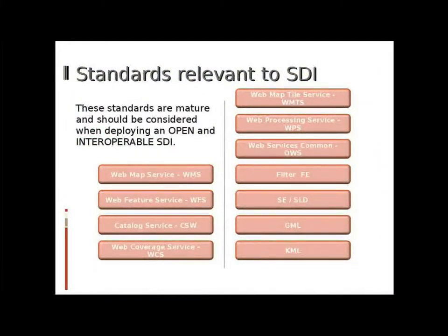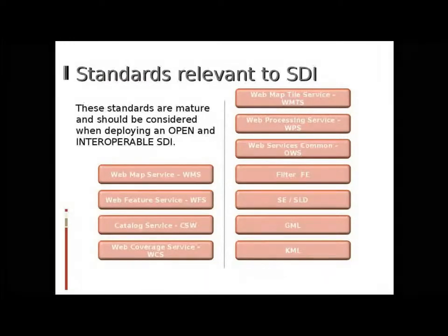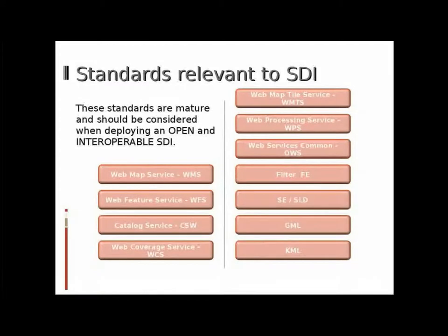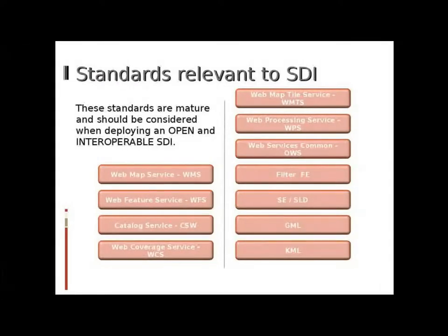Having looked at the WMS, WFS, and CSW, what other standards are available for deployment in an SDI? This slide lists a stack of mature OGC web service standards and information encoding standards to consider when deploying an SDI. We have the WMS, WFS, and CSW, but also the WCS for deploying coverages onto the web, the WMTS for deploying web map tiles like Google and Bing, the WPS or web processing service for deploying algorithms or geoprocessing methods onto the web, and underpinning all of these is the OWS common standard, which defines common elements used among the other standards.